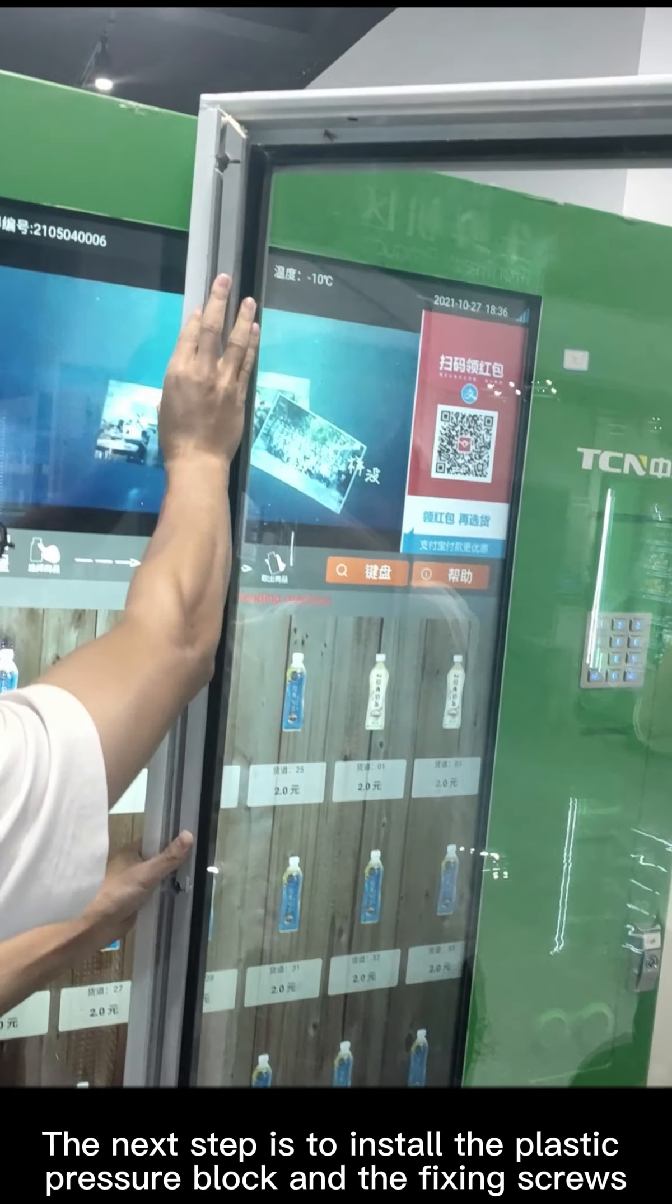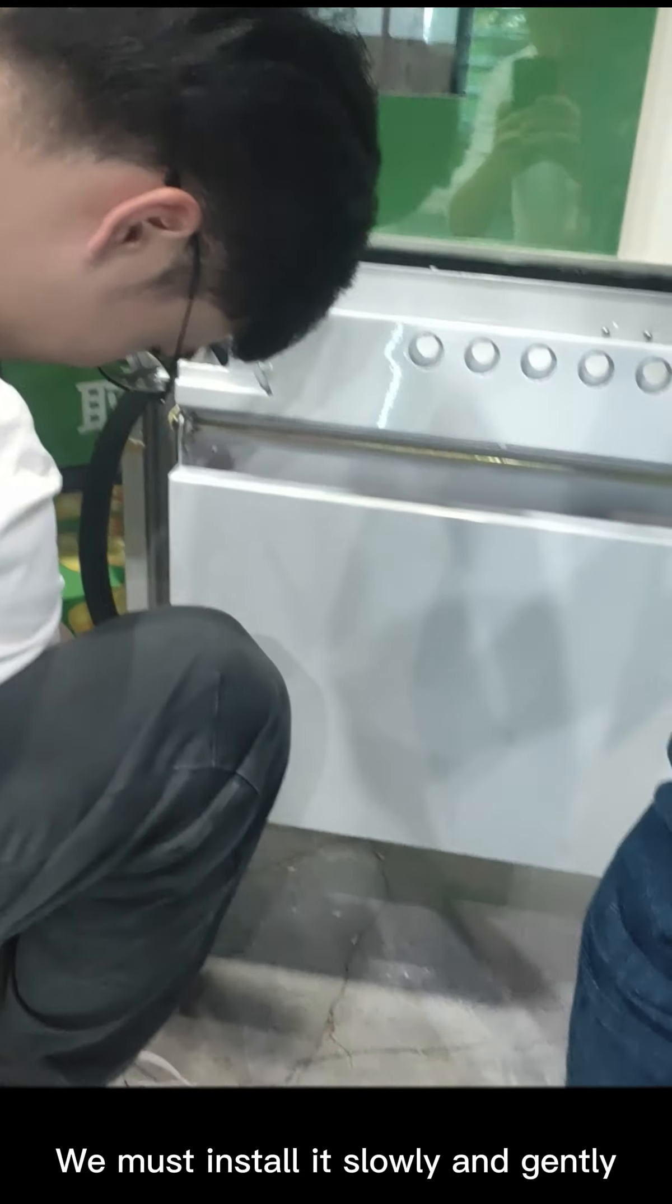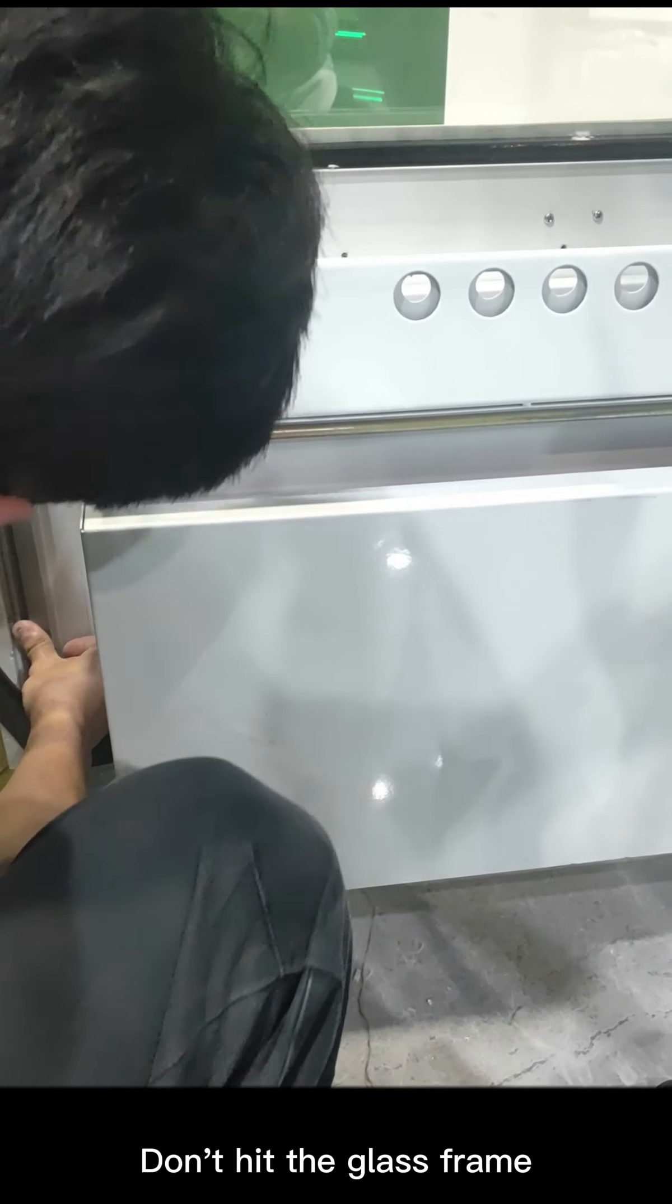The next step is to install the plastic pressure block and the fixing screws. We must install it slowly and gently. Don't hit the glass frame.